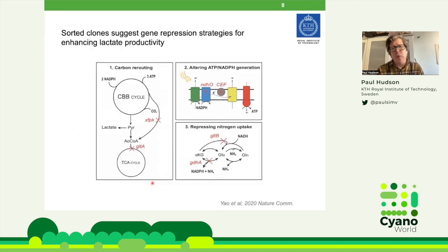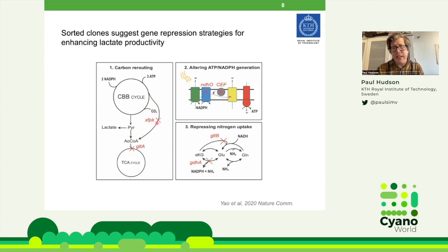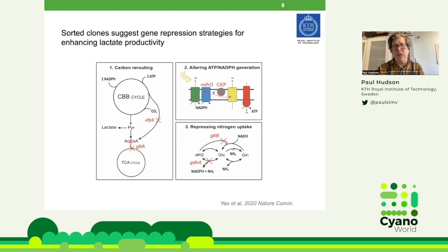In this example, we found many clones that appeared to increase the amount of lactate the cells were producing. A few were a bit obvious. For instance, repression of phosphoketolase probably prevents bypassing of pyruvate, so knocking it down allows more pyruvate to accumulate, which allows more lactate — which is derived from pyruvate. Another one is citrate synthase, where repressing it causes accumulation of acetyl-CoA and pyruvate, and probably more lactate.